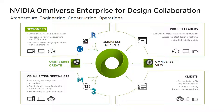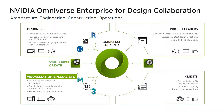Designers with Omniverse Create Entitlement can connect into Nucleus and start a live editing session. In this example, designers are working on Revit, Rhino, and SketchUp, creating and iterating on a single source of truth dataset. They can produce high-fidelity visualizations with RTX renderers and share data across these different and traditionally incompatible design applications. Visualization specialists with Omniverse Create Entitlement can access design data in real-time, seeing all design changes immediately.